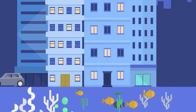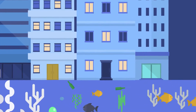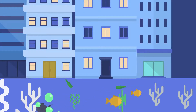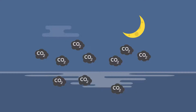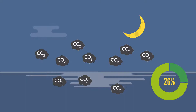Over 3 billion people depend on marine and coastal biodiversity for their livelihoods. However, today we are seeing 30% of the world's fish stocks overexploited, well below a level at which they can produce sustainable yields. And we are seeing a 26% rise in ocean acidification since the beginning of the industrial revolution.